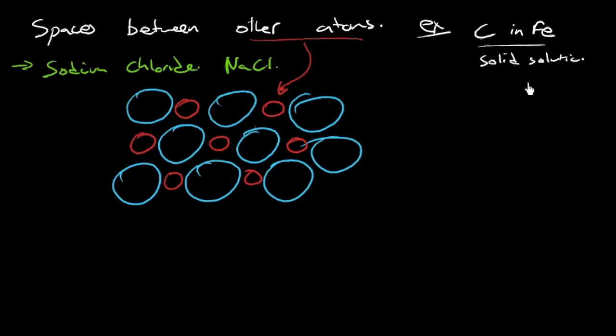But what kind of interstitial site is it? And to look at that, we need to actually go out into three dimensions. It looks like, in this case here, it looks like the chlorine is touching four sodiums, or, in fact, actually is the way we often do it, is we would look at the sodium touching four chlorines. But that's only in two dimensions, right? That's two dimensions.